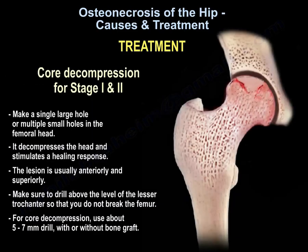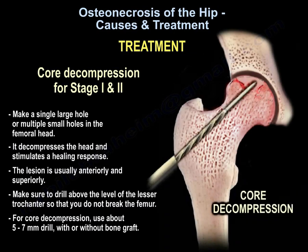Core decompression is done for stage 1 and 2. You make a single large hole or multiple small holes in the femoral head. It decompresses the head and stimulates a healing response. The lesion is usually anterior and superior. Make sure you drill above the level of the lesser trochanter so we don't break the femur. We use about a 5 to 7 mm drill with or without a bone graft.